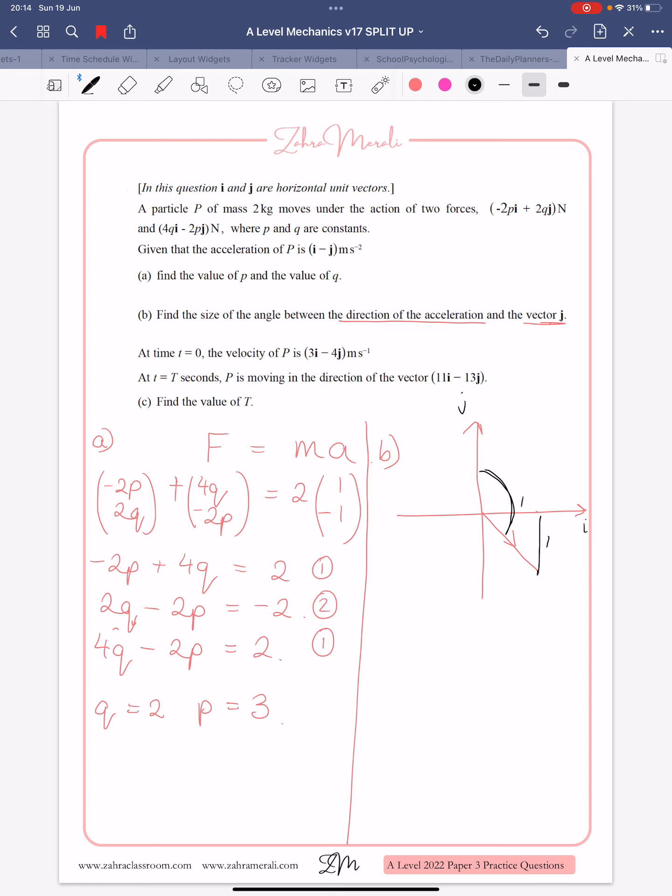We know that this is 1 and 1, so we know this is 45. And then obviously we've got 90 here. So the size of the angle is going to be 90 plus 45, so 135 degrees. If you didn't remember that tan 45 is 1, you could have done tan alpha equals 1. So alpha is tan to the minus 1 of 1, which gives you the 45.